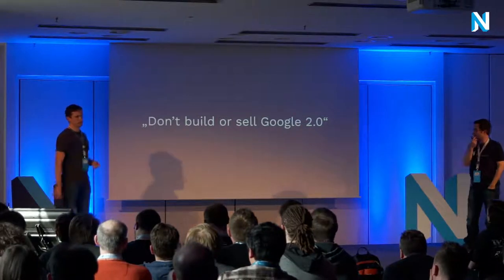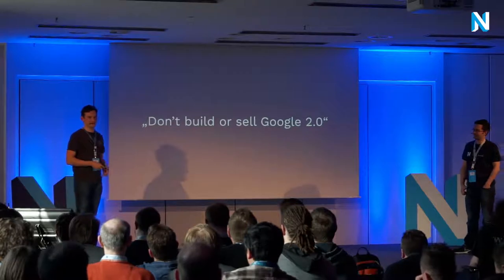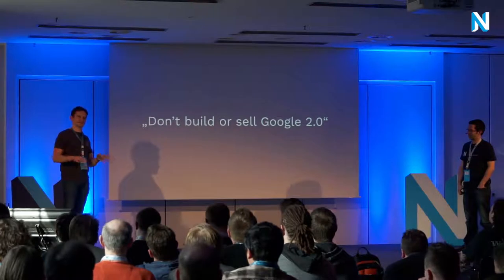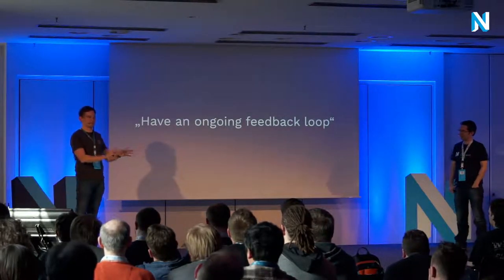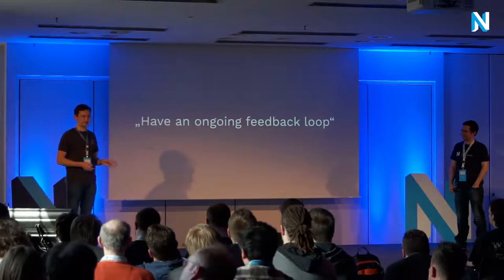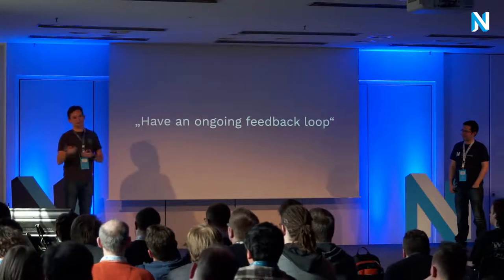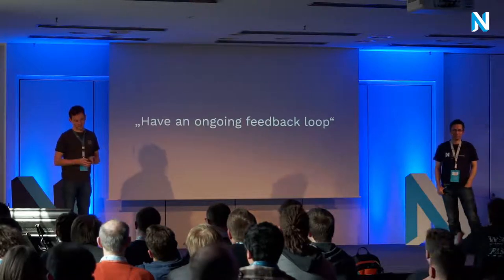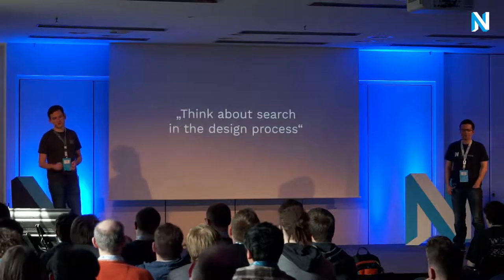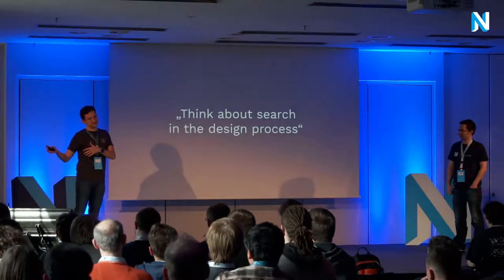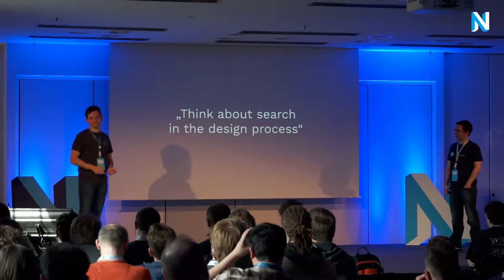Don't build or sell Google 2.0 — customers may ask for something like Google, but you can never do that since they spend billions on it with tons of specialists. Find out what your customer actually wants to achieve and do that. Have an ongoing feedback loop — don't deliver a search and be done with it. The first iteration is usually not so good; you need user stories, analytics, track what real people are looking for, then improve the search. Think about it early in the design process — discuss it with the designer and customer to have it in a prominent place so it has real value.